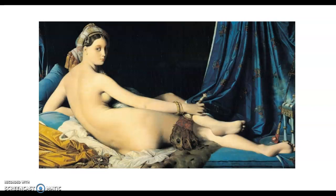Here we have Ingres' 'La Grande Odalisque,' in the same school as other odalisques we've seen before. He's doing a few things differently from painters like Titian. He has falsely elongated her back — where her back would normally end, it continues further. He's elongated her tailbone to give a dramatic curve.